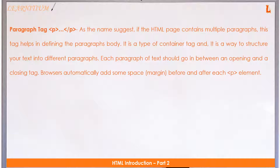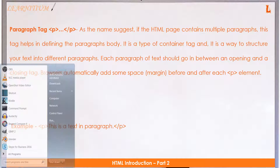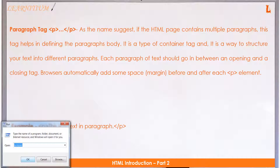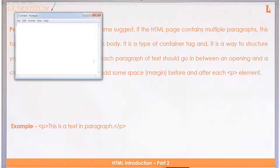Paragraph tag: as the name suggests, if the HTML page contains multiple paragraphs, this tag helps in defining the paragraph's body. It is a type of container tag and is a way to structure your text into different paragraphs. Each paragraph of text should go in between an opening and a closing tag.